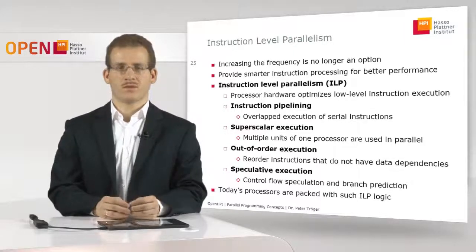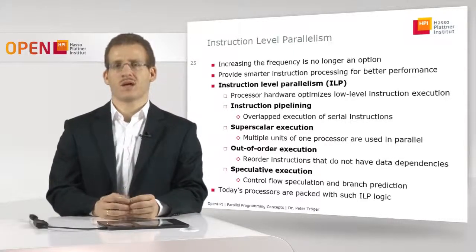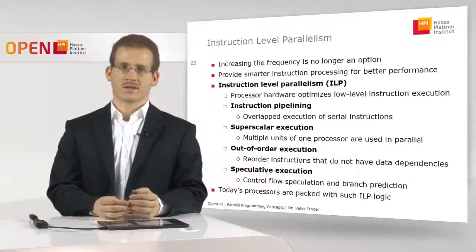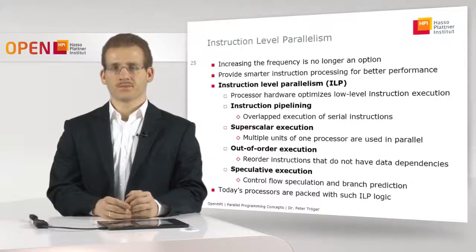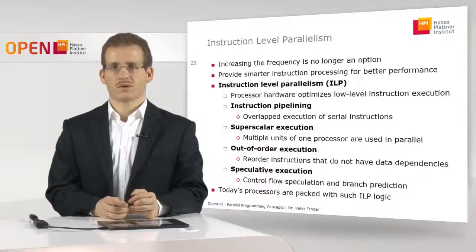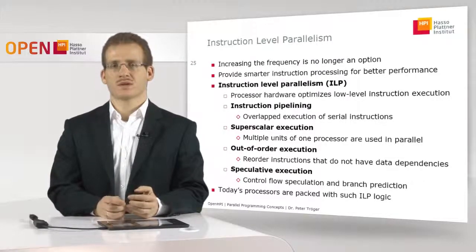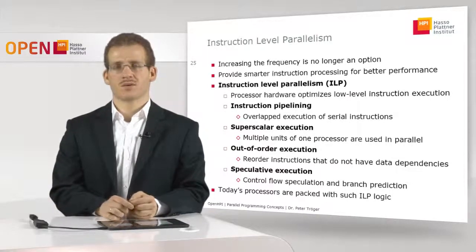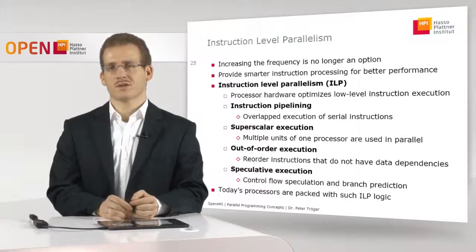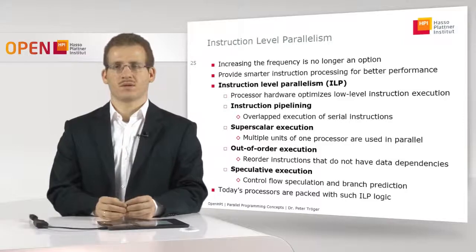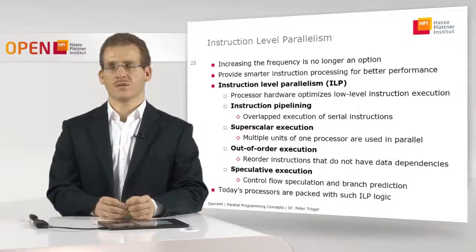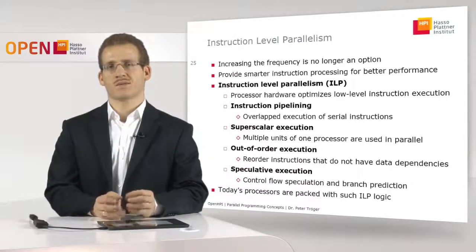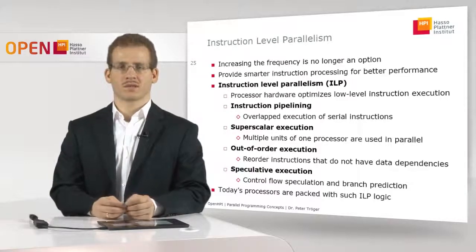A fourth example for instruction level parallelism is speculative execution, where the processor tries to guess where future instructions will lead. One example is the so-called branch prediction, where the processor tries to guess where future branches in your program — control flow changes, jumps, or loops — will go to. If the processor has this knowledge, it can start to perform data caching or any kind of smart data handling in order to make the overall processing run faster.